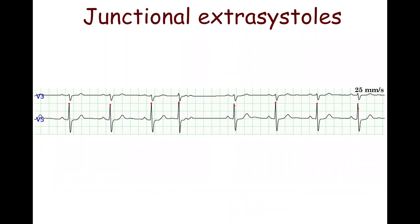In junctional extrasystoles, the P-wave is absent or is located just before or after the QRS complex. The PR interval in the extrasystolic complex is less than 120 ms. A retrograde P-wave is often superimposed on the ST segment.